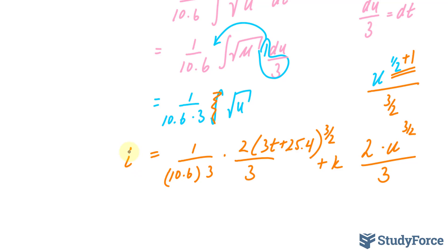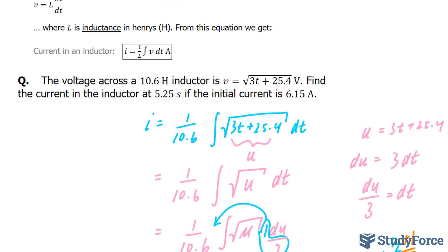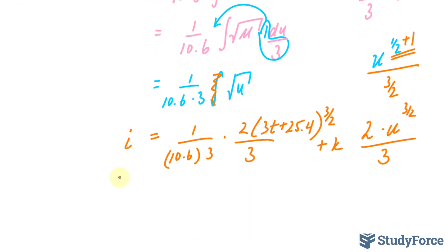I need to find my constant next, so I'll use the information provided. They tell us that the initial current is 6.15. If that's the case, I can place 6.15 into here. And since it is the initial current, that means it's starting at time 0, so I can replace this t with 0. If I do replace this t with 0, this goes to 0, giving us the following expression: 1 over 10.6 times 3 times 3. And at the top we have 1 times 2, and this has become 25.4 to the power of 3 over 2 plus k.